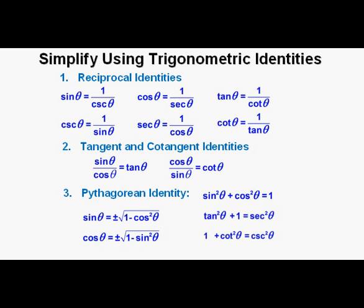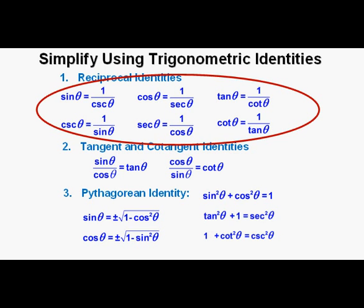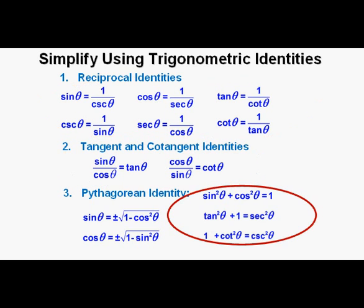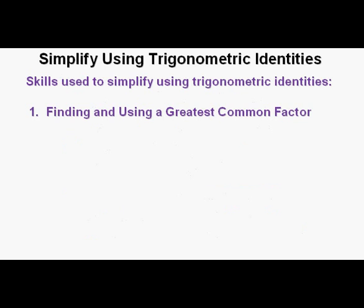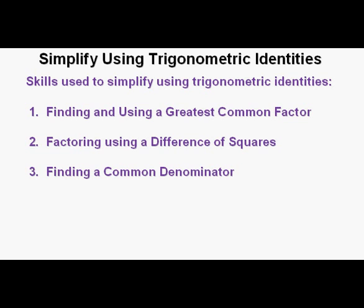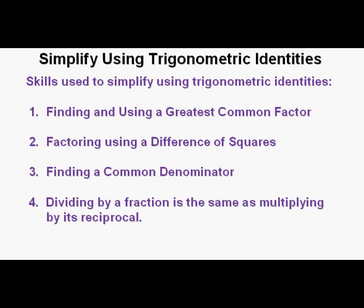Here is the list of identities we'll pull from to simplify these trigonometric expressions. We'll use the reciprocal identities of the six trigonometric ratios or functions, the tangent and cotangent identities, and the Pythagorean identities. To do these simplifications, we'll use some basic algebra techniques such as finding and utilizing a greatest common factor, factoring by using the difference of squares method, finding common denominators to simplify, and dividing by a fraction — which is the same as multiplying by the reciprocal of that same fraction.